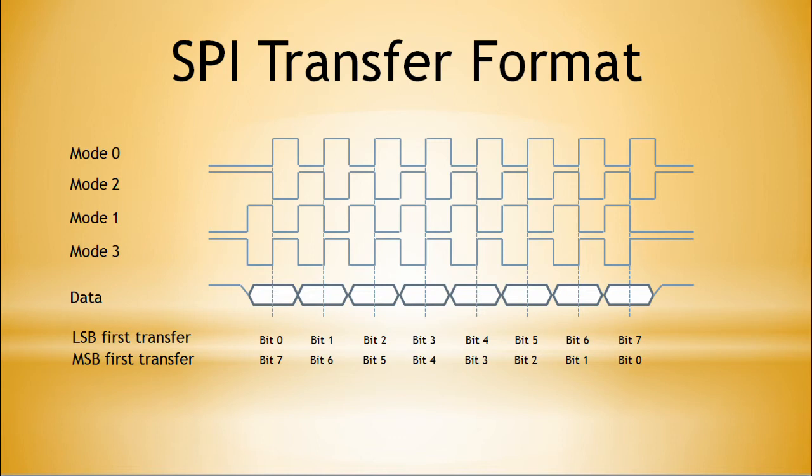As shown in the figure, 8-bit data is transmitted and received, but data bits may be transmitted and received selectively up to a maximum of 16 bits. In general, SPI supports MSB first, but may also support both MSB first and LSB first.